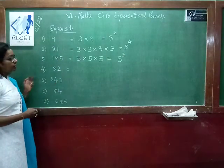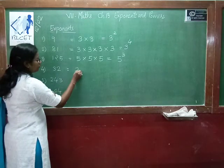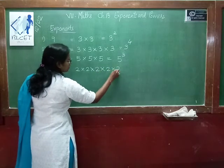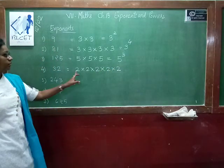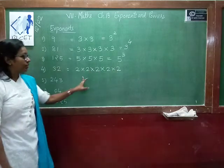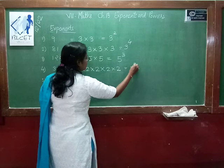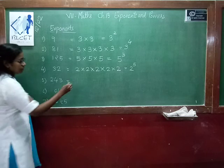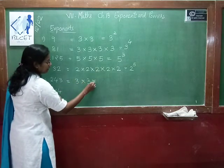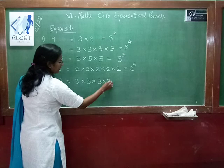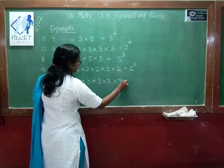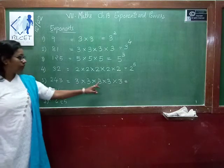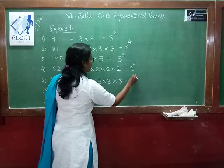For 243: 3 times 3 is 9, times 3 is 27, times 3 is 81, times 3 is 243 — so 3 is repeated 5 times, giving 3 power 5.